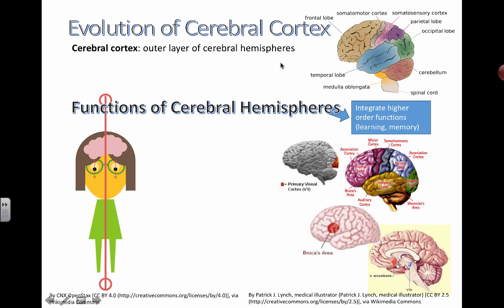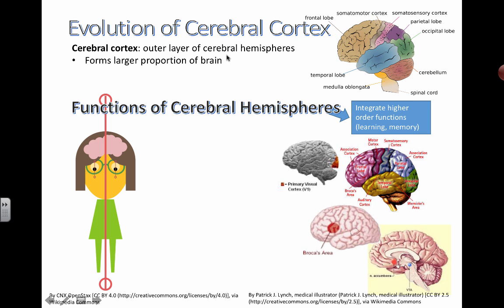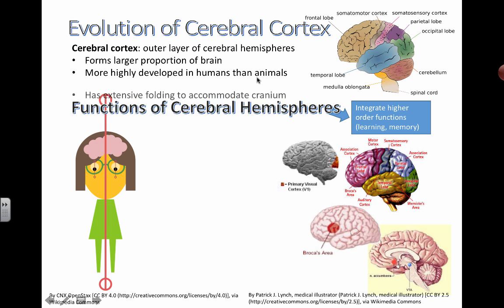The cerebral cortex is the outer layer of the cerebral hemispheres. This area has a lot of different functions and we can identify many very specific areas. It forms the larger proportion of the brain, and we are the only highly intelligent organisms — your cat and dog are kind of smart, but our cerebral cortex is more highly developed compared to other animals.